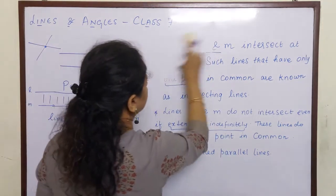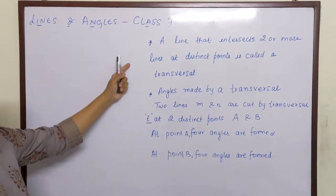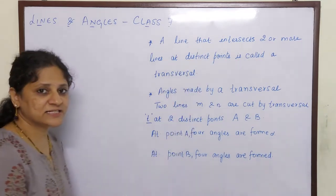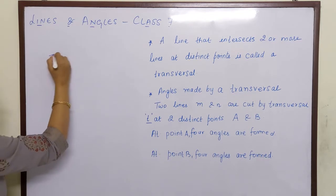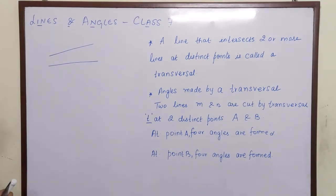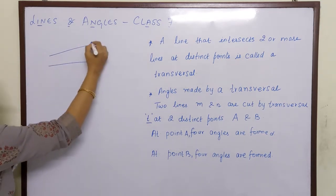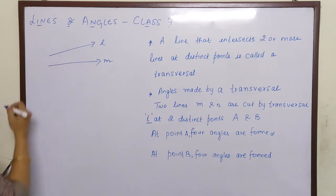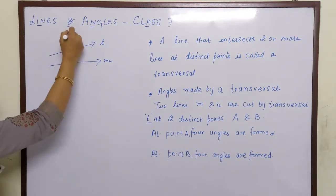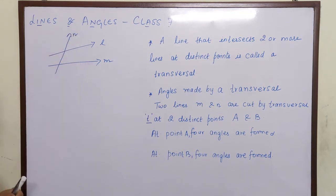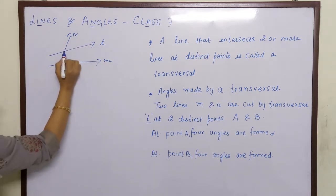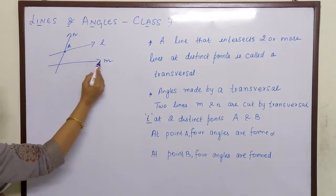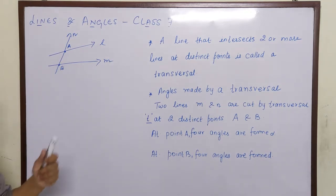Now let us start with the next topic — transversal. A transversal is a line that intersects two or more lines at distinct points. So let us assume this is line L and line M. There is a line N which intersects these two lines at distinct points, meaning different points. Line N meets line L at A and line N meets line M at B, so A and B are distinct points.